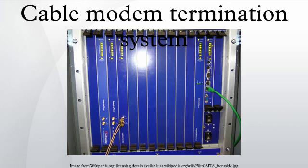Different CMTSs are capable of serving different cable modem population sizes, ranging from 4,000 cable modems to 150,000 or more, depending in part on traffic. A given headend may have between 1 to 12 CMTSs to service the cable modem population served by that headend or HFC hub.